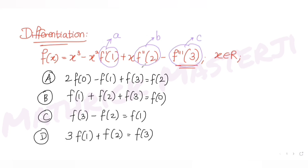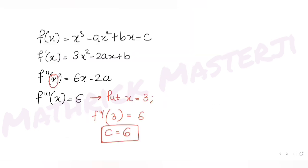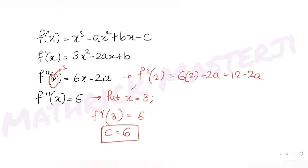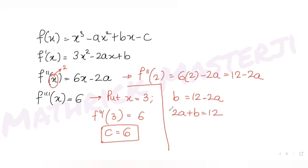Now for f''(2): putting x = 2, f''(2) = 6·2 − 2a = 12 − 2a. Since f''(2) was our constant b, we get b = 12 − 2a, which gives us equation one: 2a + b = 12.